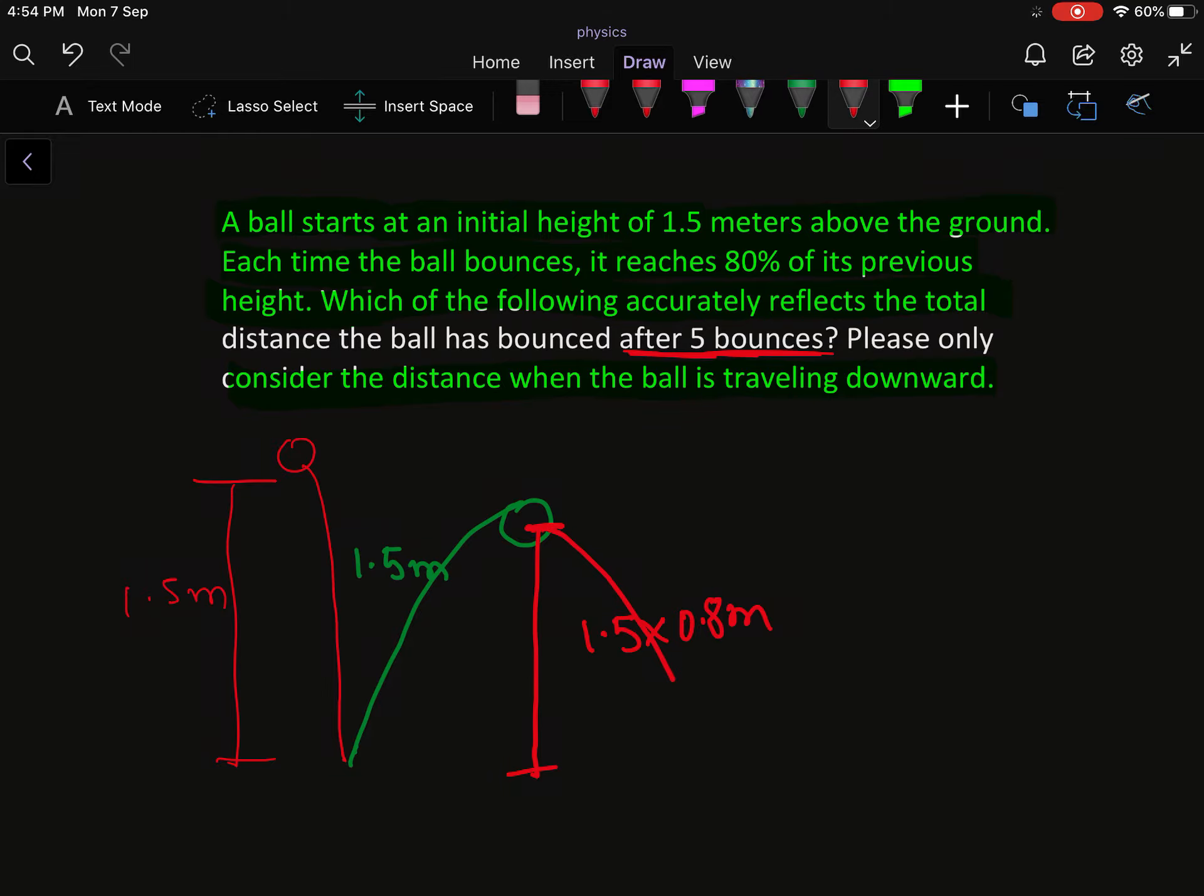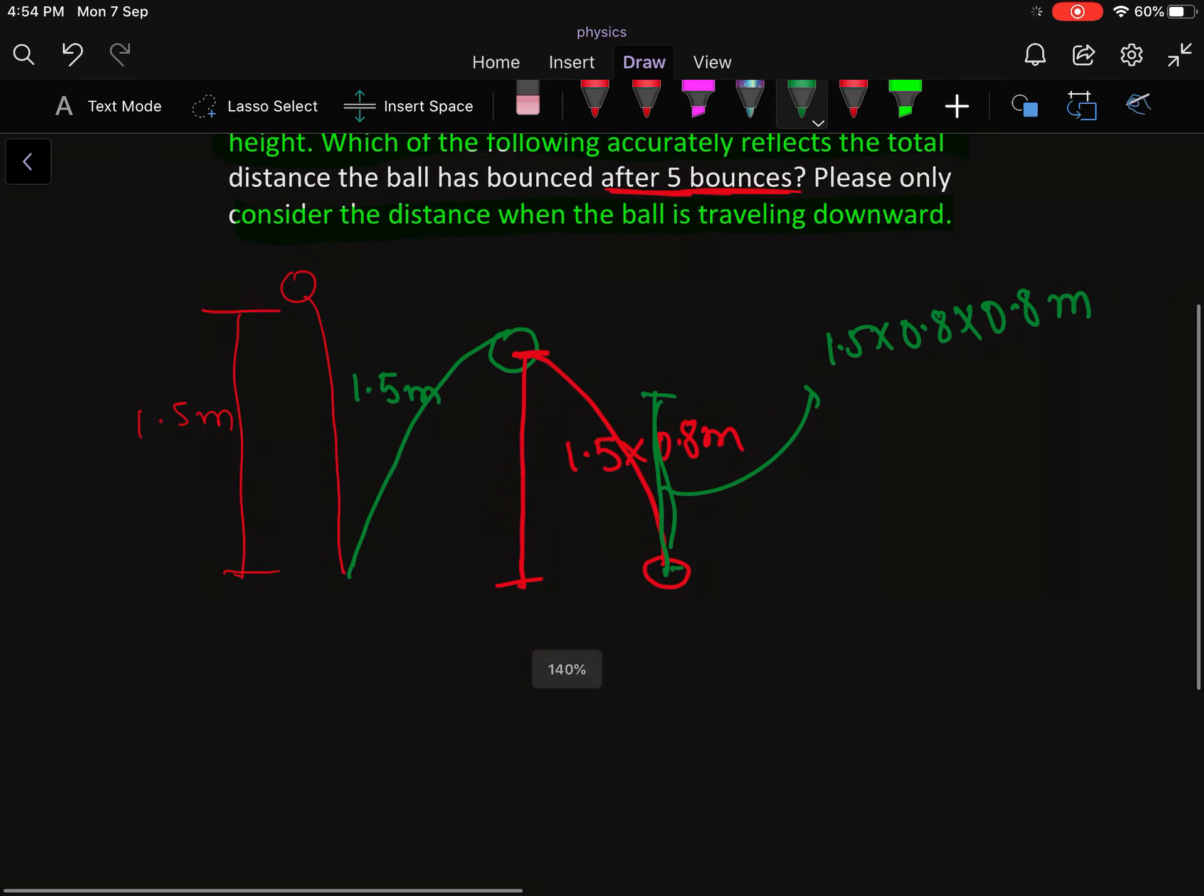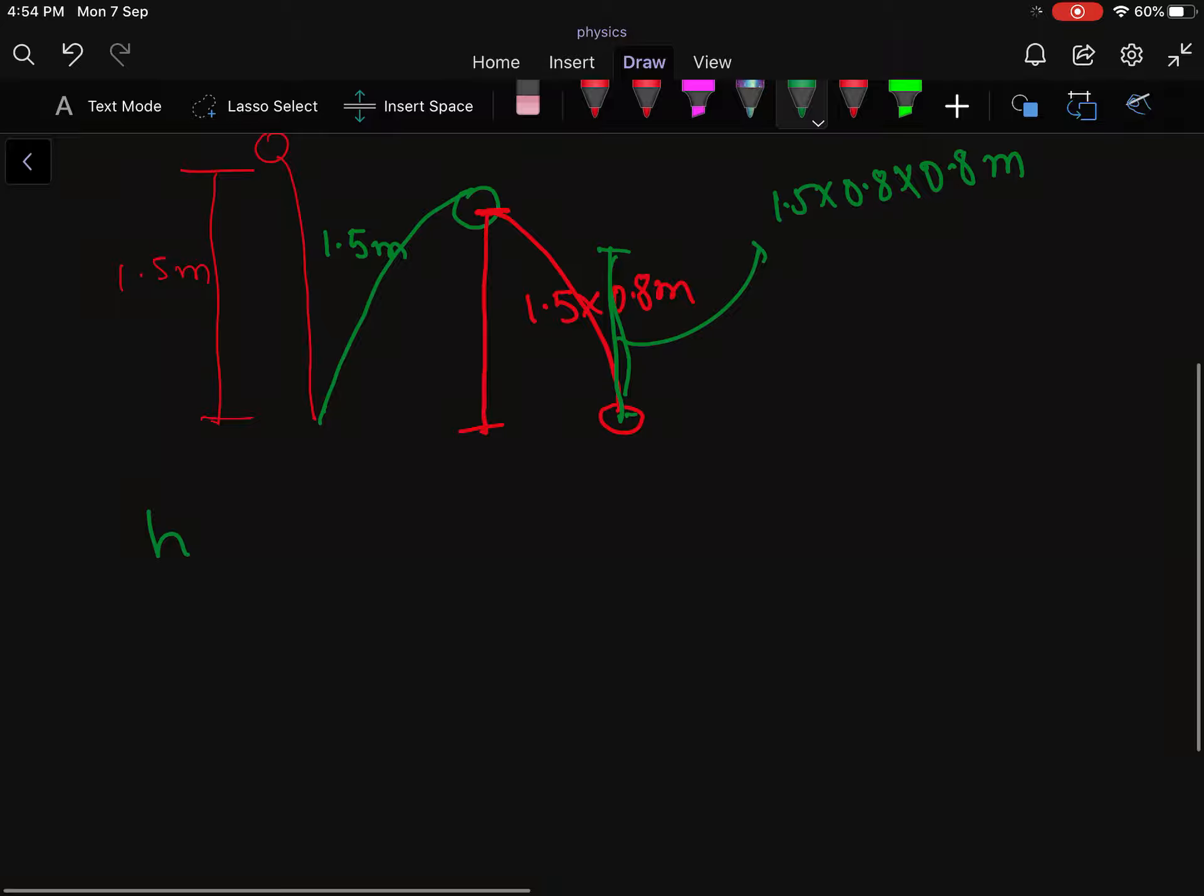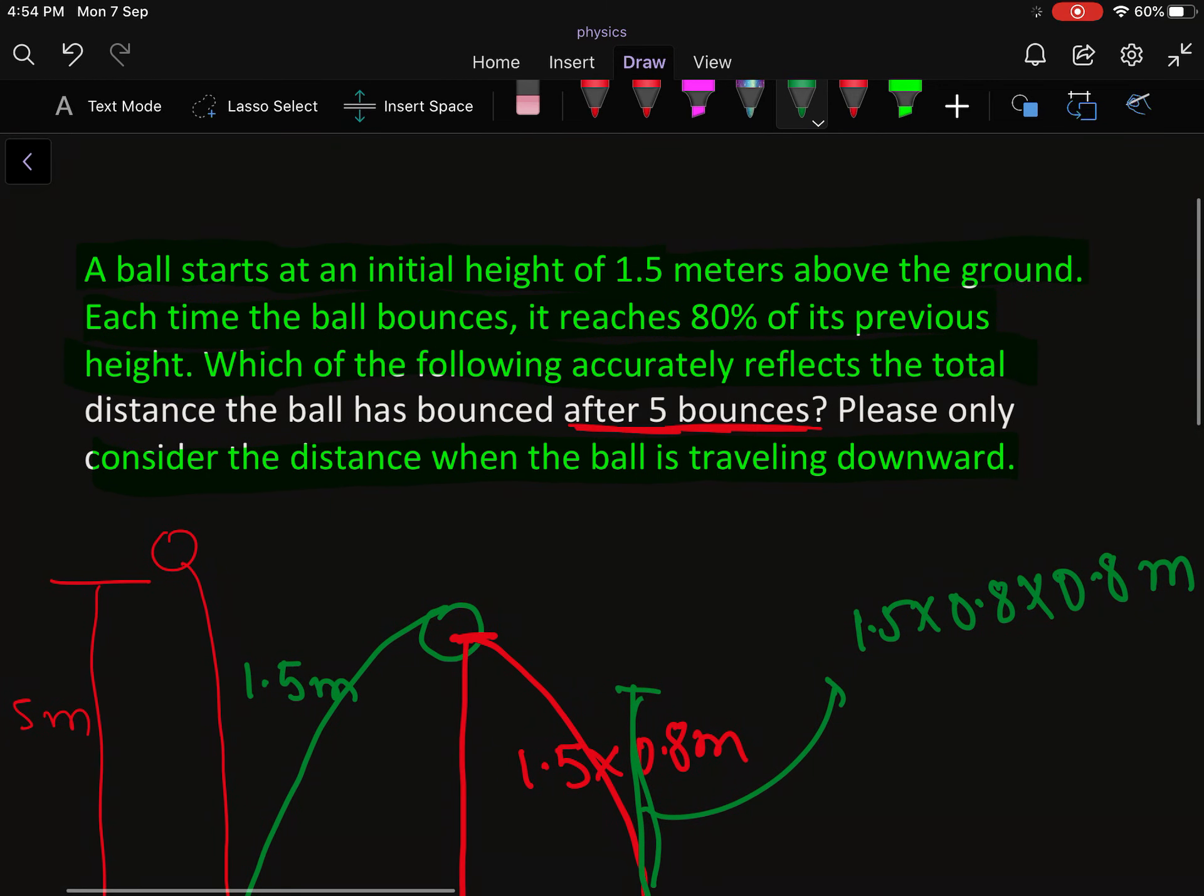Now it will again do a second collision, then it again attains a third height, and this height is 1.5 × 0.8 × 0.8 meters. So you can see this is the series. For the first bounce it is 1.5 meters, so in the second bounce it travels 0.8 times 1.5 meters. In the third bounce it will travel 1.5 × 0.8 × 0.8 meters, because at every bounce it only bounces 80% of the previous height.